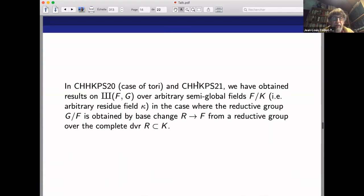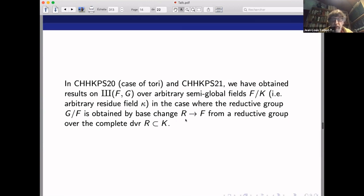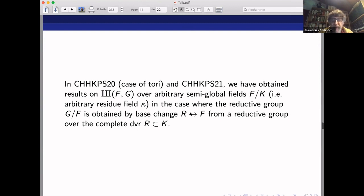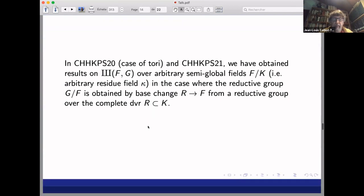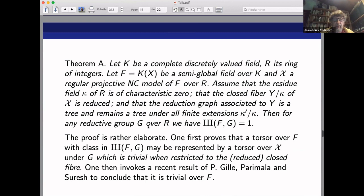So in the case of tori, in recent papers with these six authors, we worked on the case of tori, and then the paper which will be on the archive within a few hours or maybe a few days. We have obtained results on SHA of F, G for arbitrary semi-global fields F over K. That is now the residue field is arbitrary. In the specific case when the group G comes from R, that is has very good reduction. So in that case we're going to use the double coset formula to get very precise information on SHA, but under the condition that the group G comes from R.